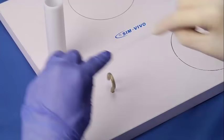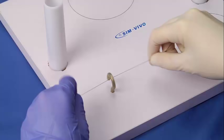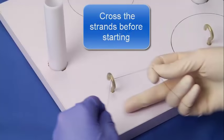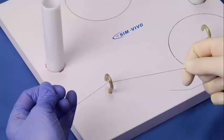Let's get started. Place a silk suture around the hook. In order to place an initial flat throw, it will be easier to cross the strands before starting. In this case, the end to the active hand goes under the passive hand.